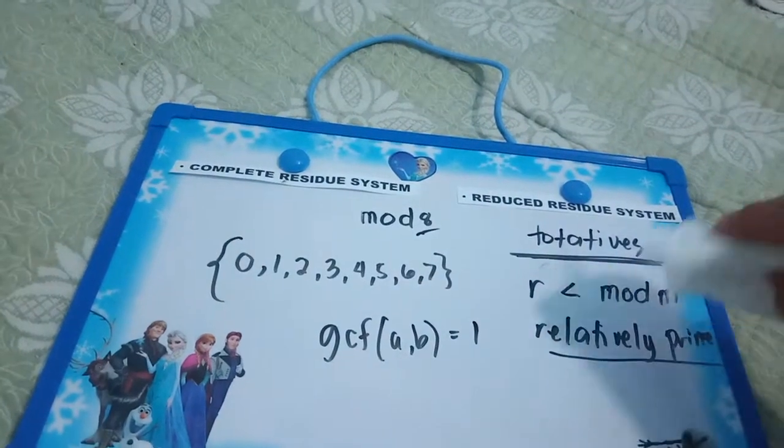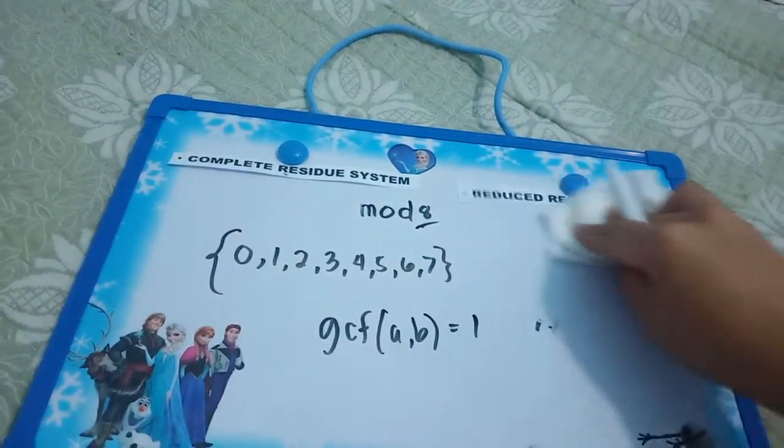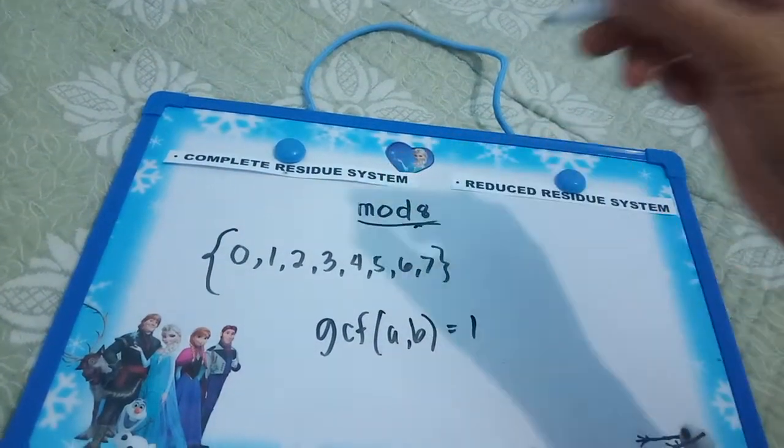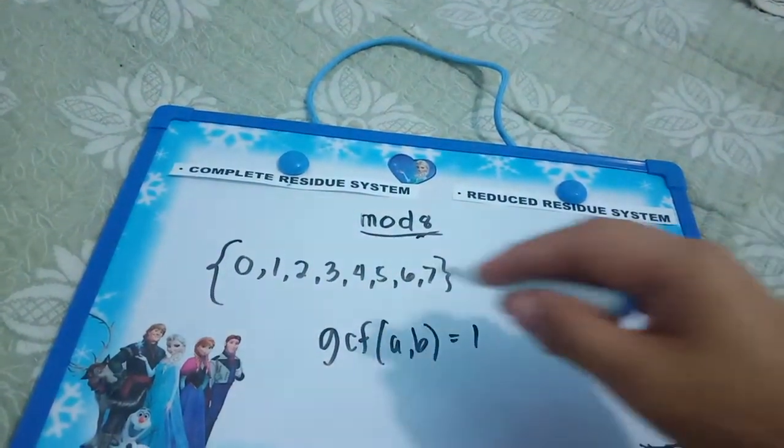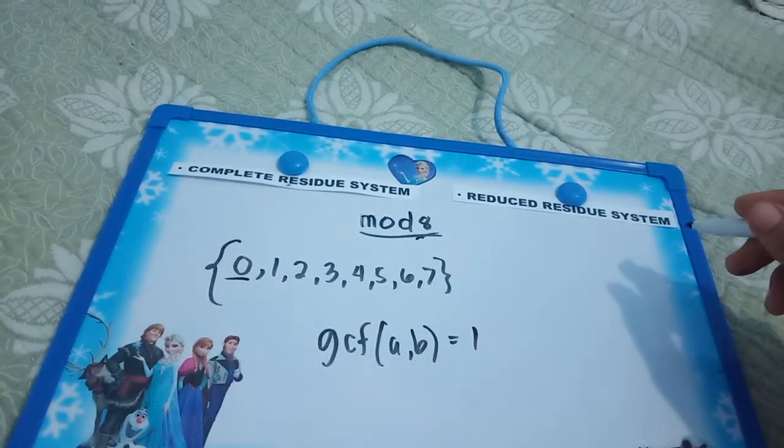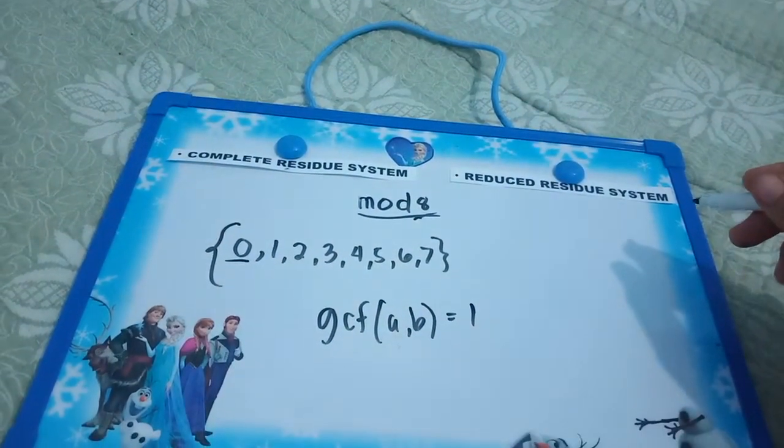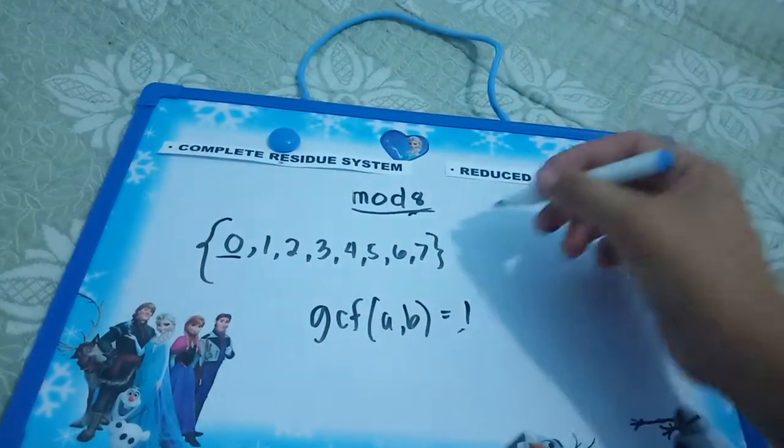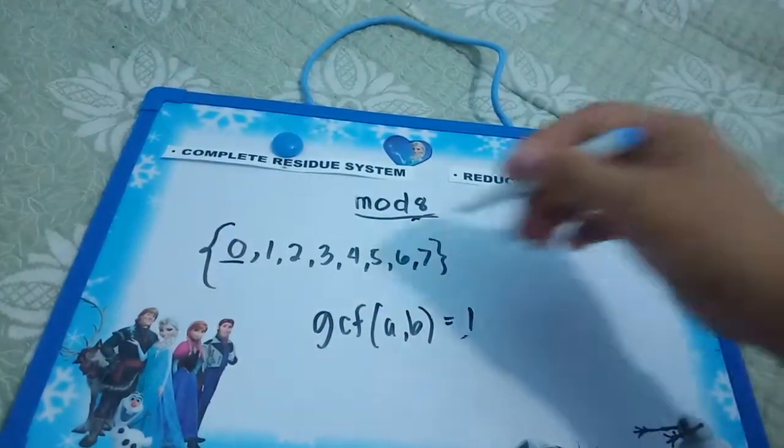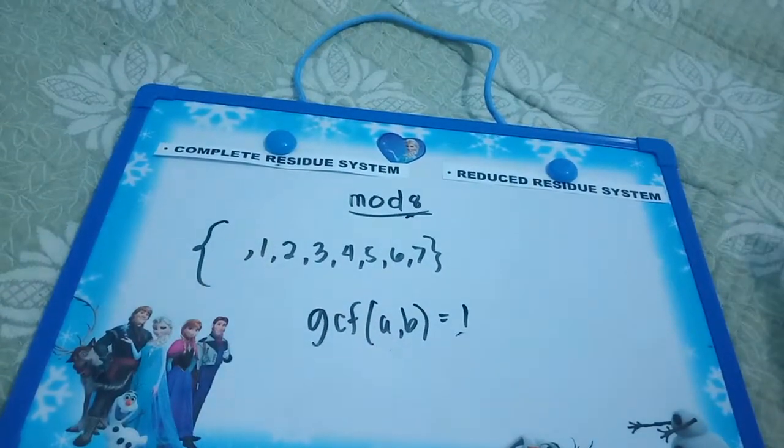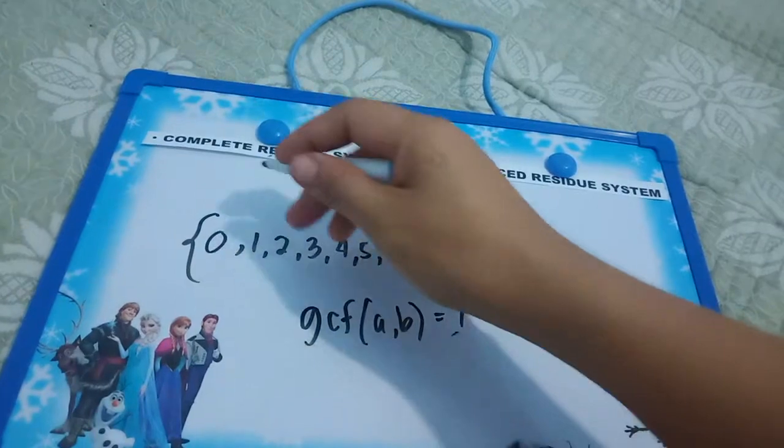So the GCF of our two numbers A and B is only 1. For example, this one. So what could be now the reduced residual system of mod 8? It could not be 0 because their GCF is not 1. So let's take 0.